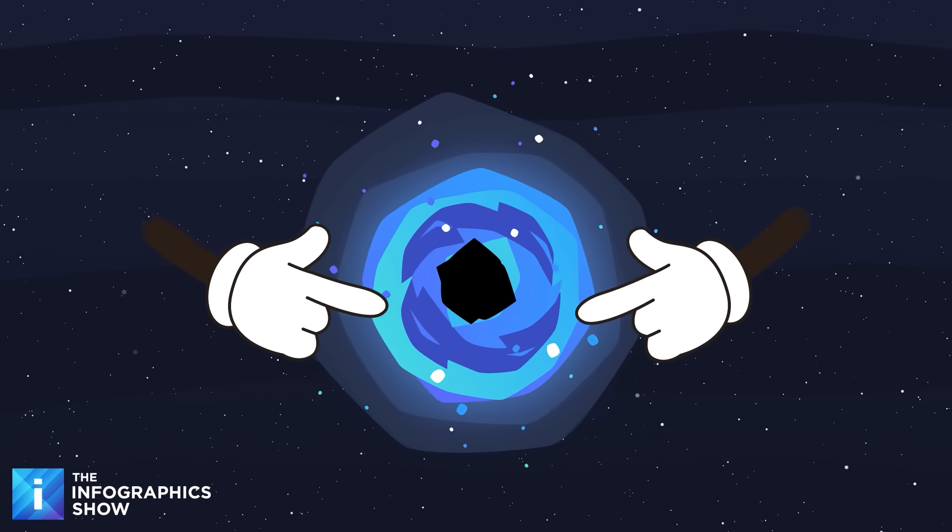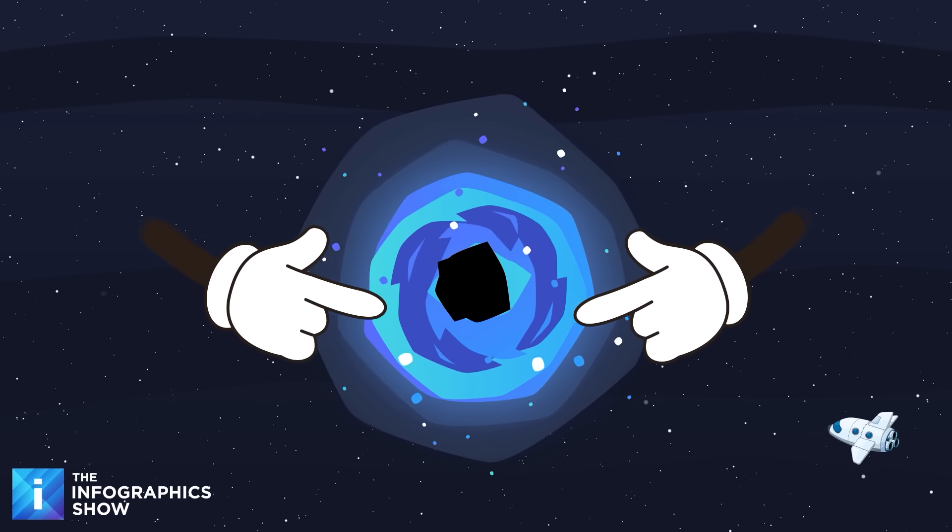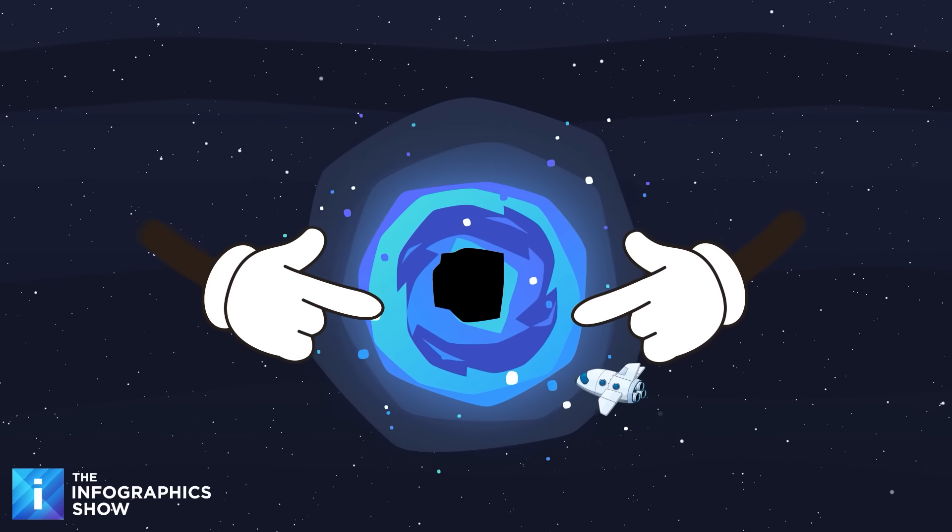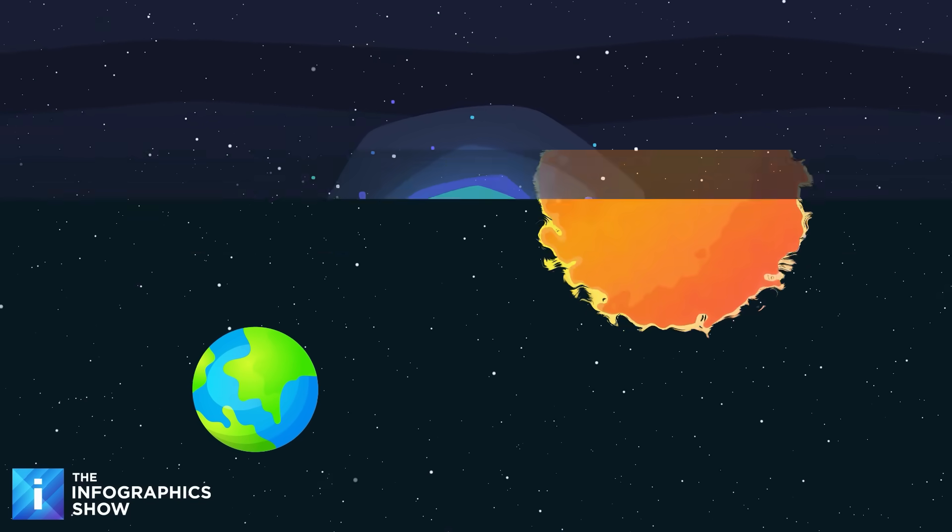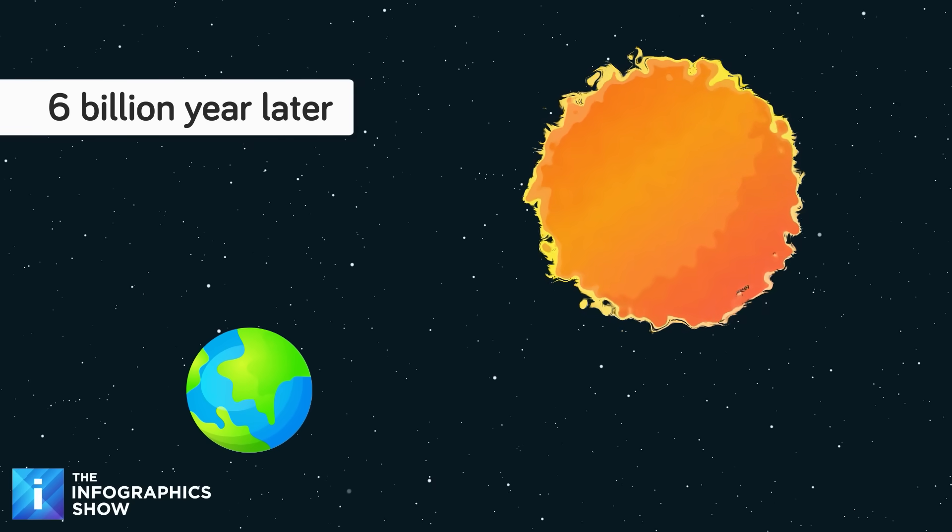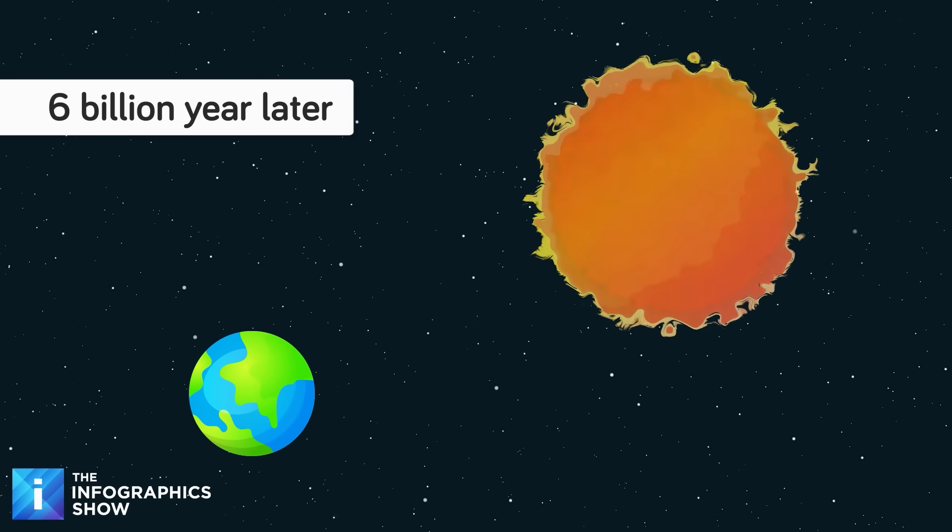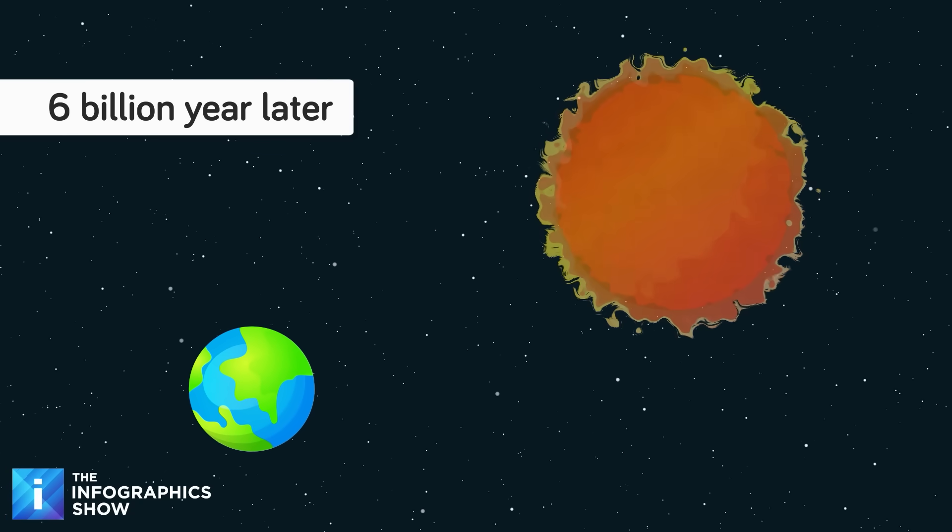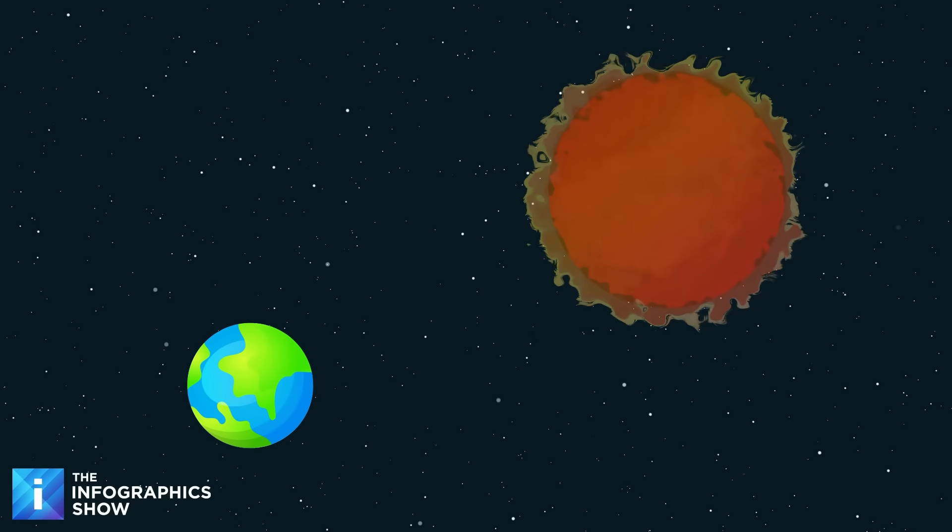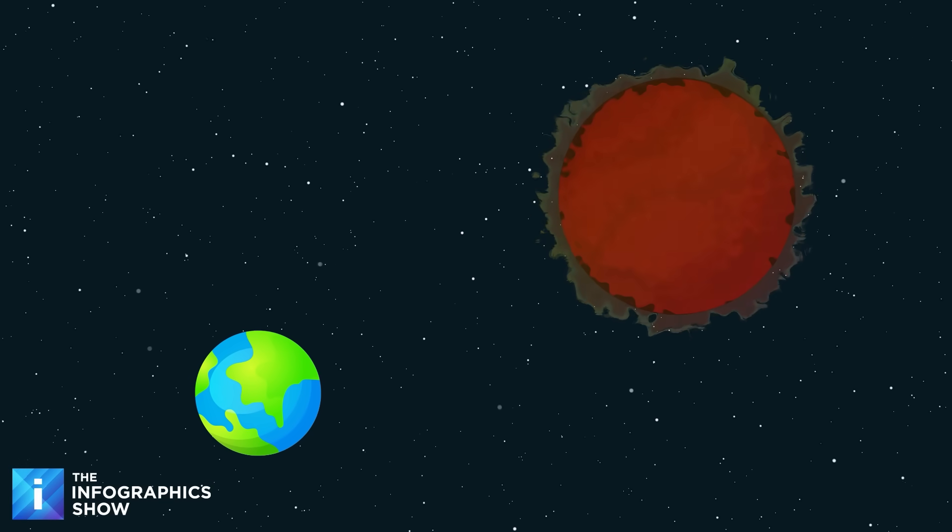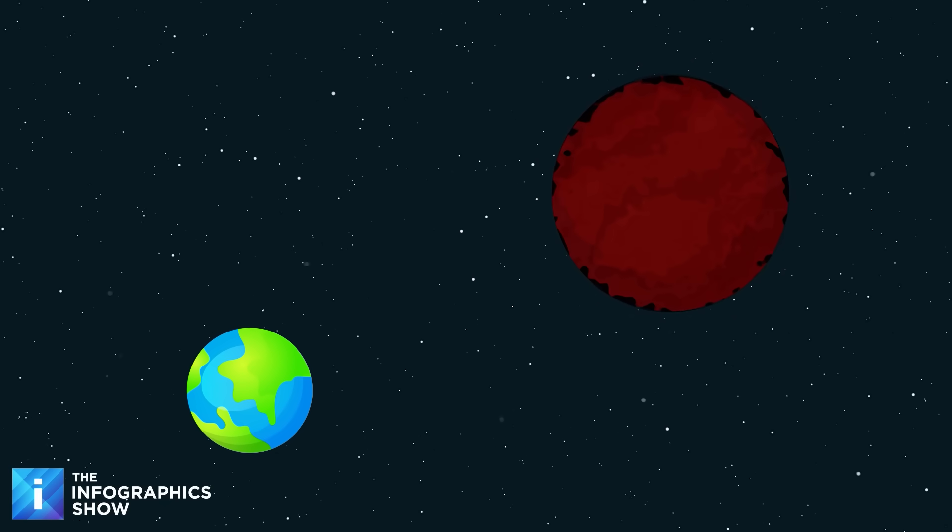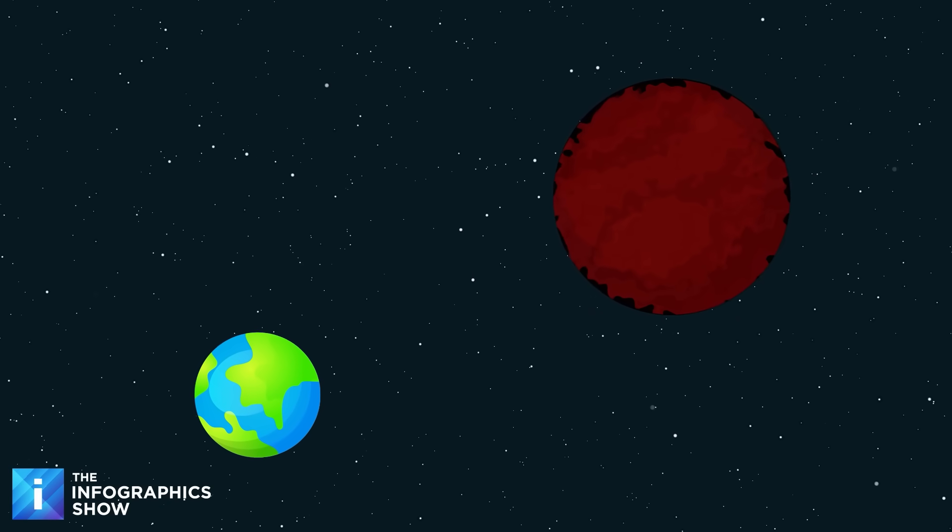Before existential dread sets in, these processes unfold on timelines so vast that they make the concept of forever seem like the blink of an eye. In about 6 billion years, our sun will expand into a red giant, rendering Earth uninhabitable. It'll be gone long before black holes pose any real threat to our solar system. Meanwhile, the Milky Way is on a slow motion collision course with the Andromeda Galaxy, set to emerge in 4.5 billion years. Surprisingly, most star systems, including ours, will remain undisturbed.